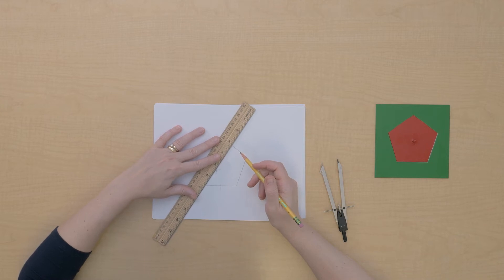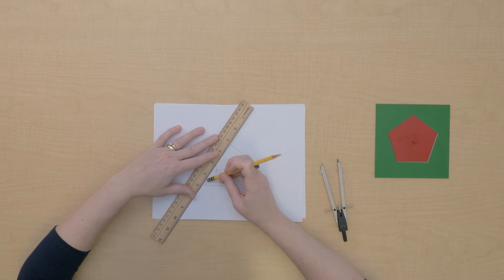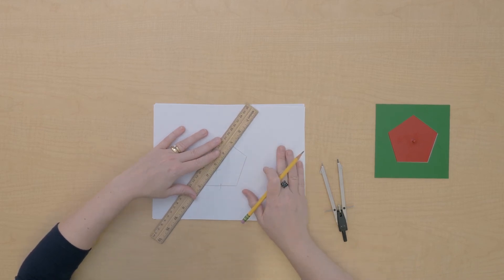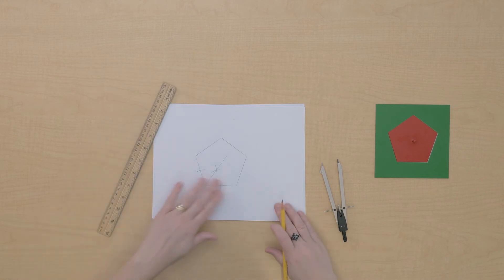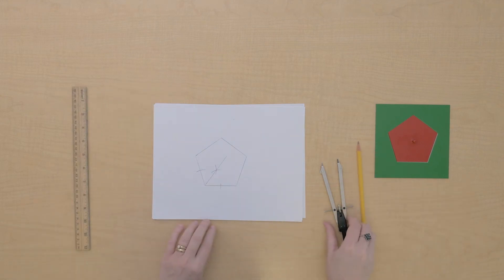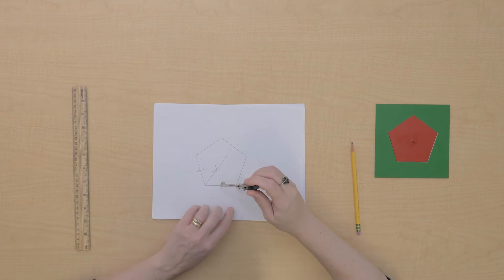Well it doesn't seem like that really helped me. That didn't really help me find the center. It sure did bisect that angle, but hang on, what if I bisect another angle here?